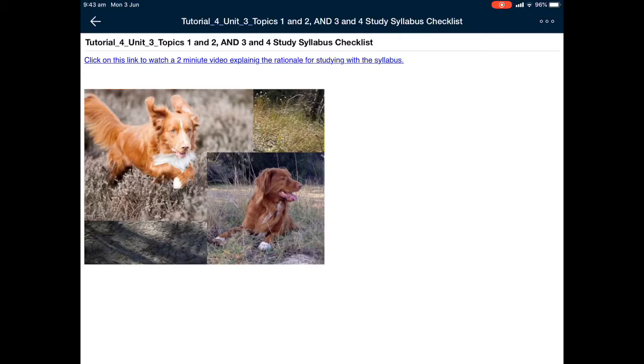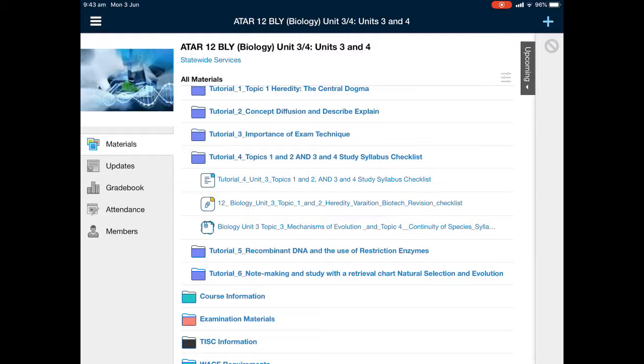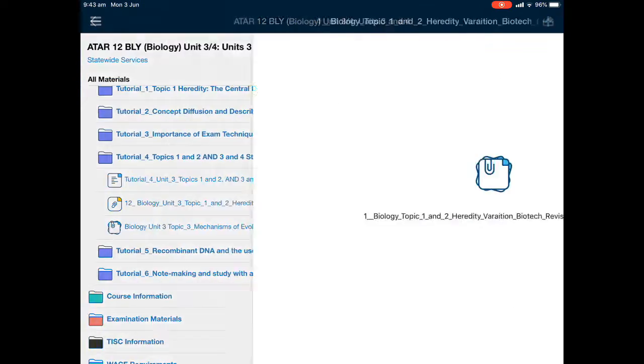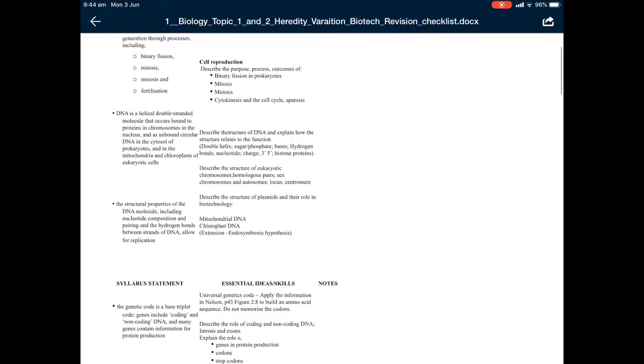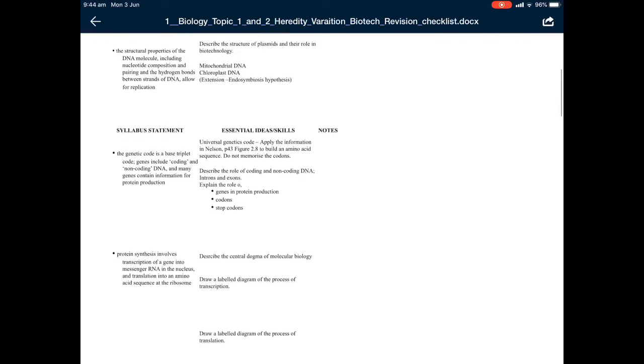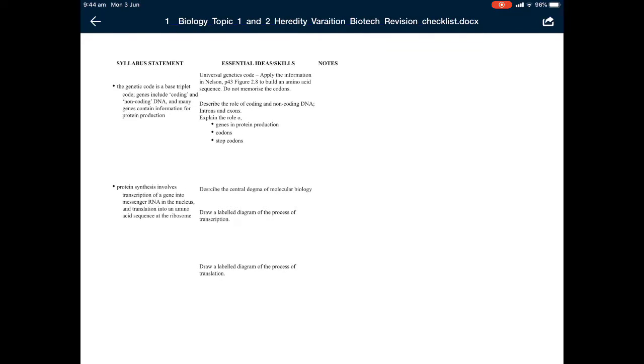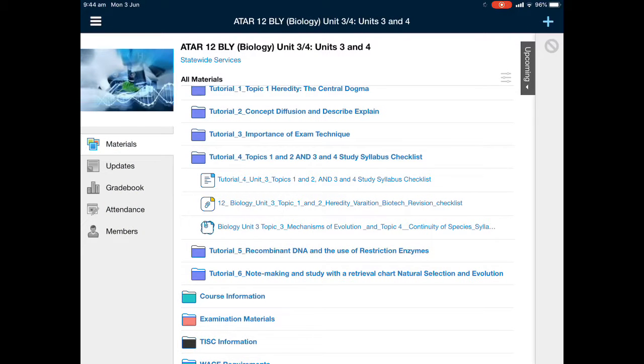You can find that on Schoology too under tutorial 4 units 1 and 2 and 3 and 4. You can watch the video if you like and I've also put the actual checklists there which I suggest you copy onto big paper, the A3 paper. If you don't want to make the notes here, if you prefer to make your own notes that's fine but just make sure you have covered every objective because as the examiners say students have to study every objective and the exam is made up on these objectives.